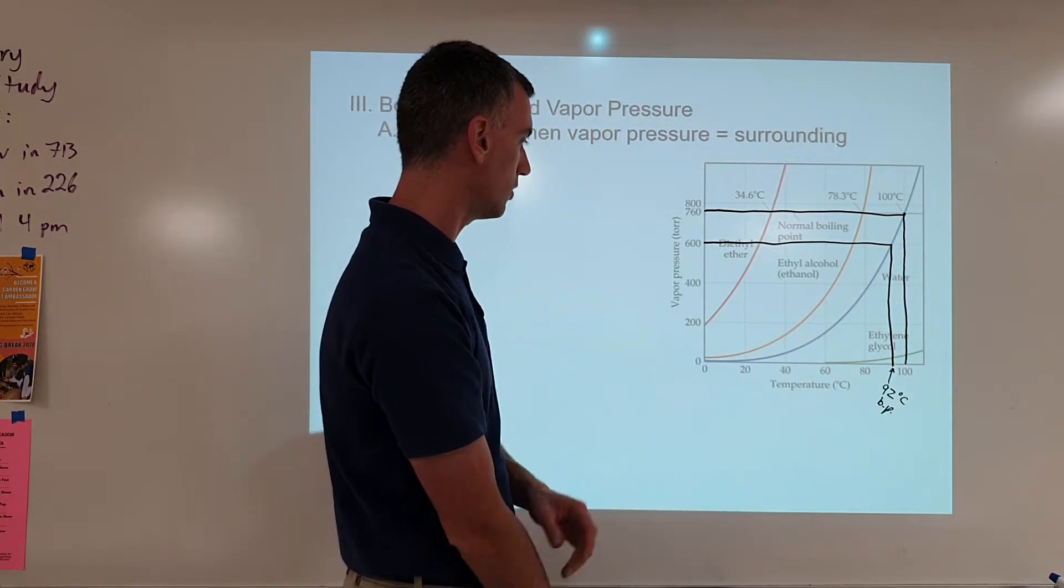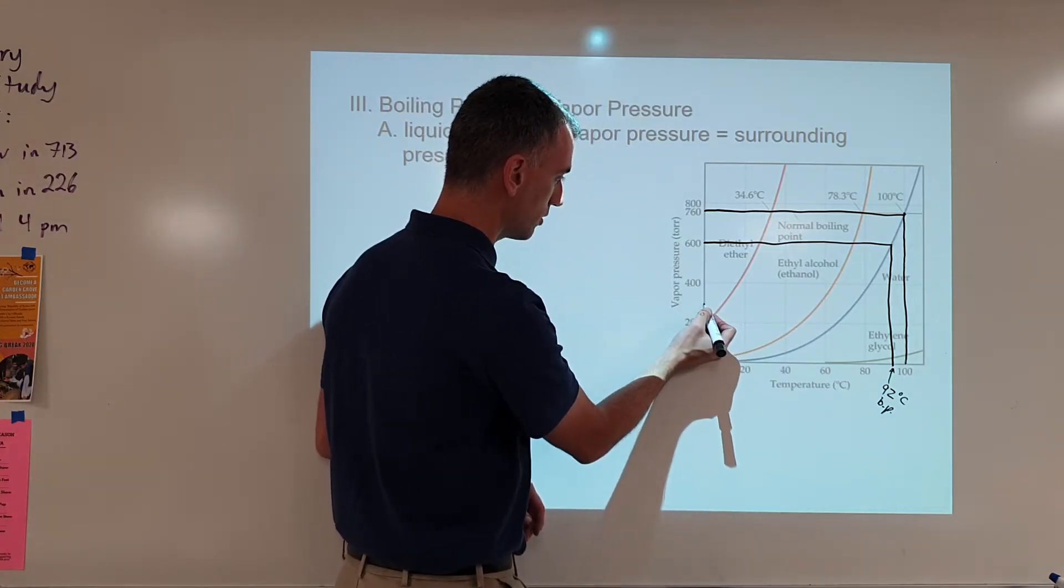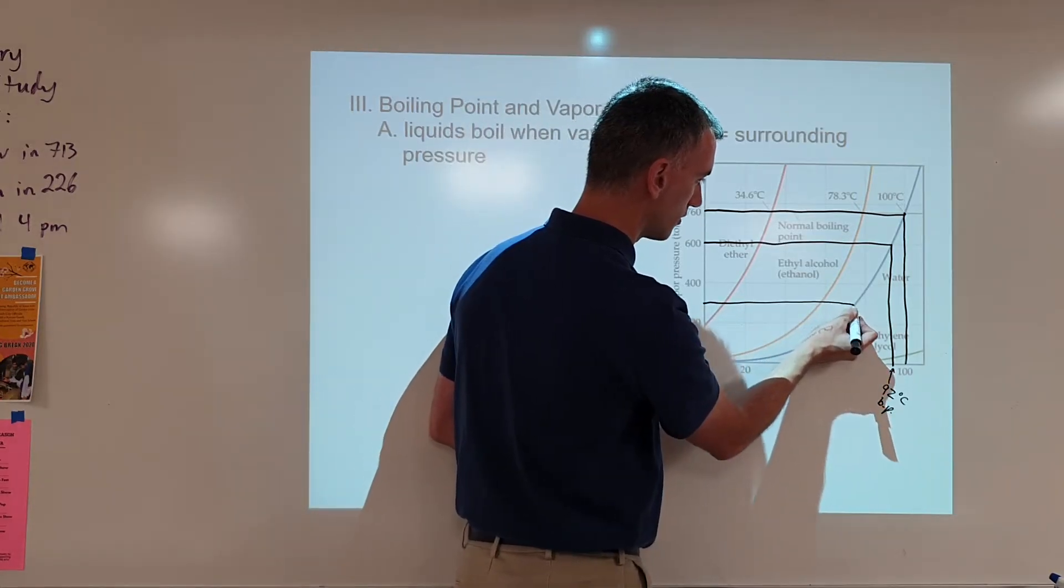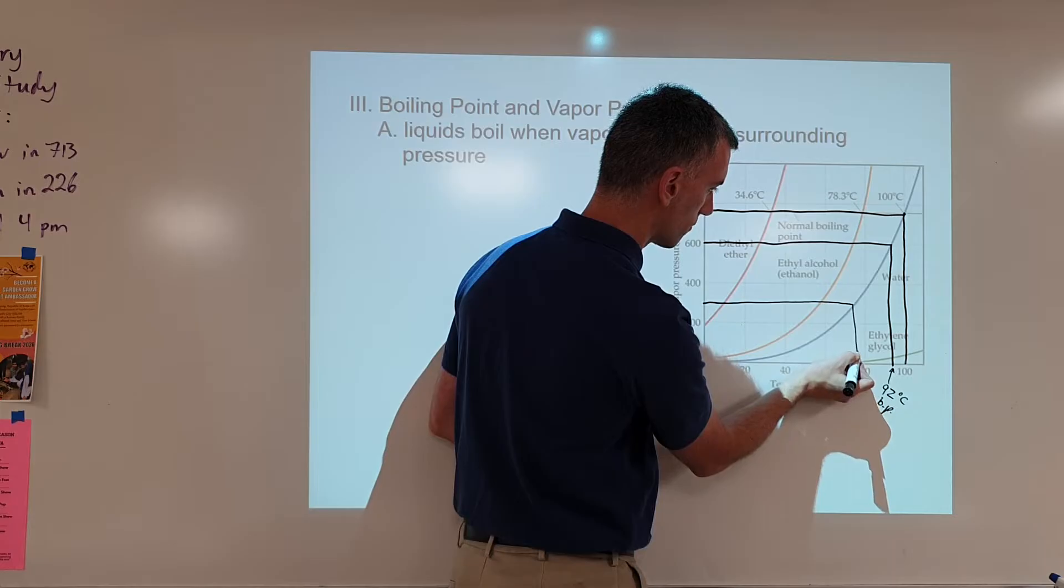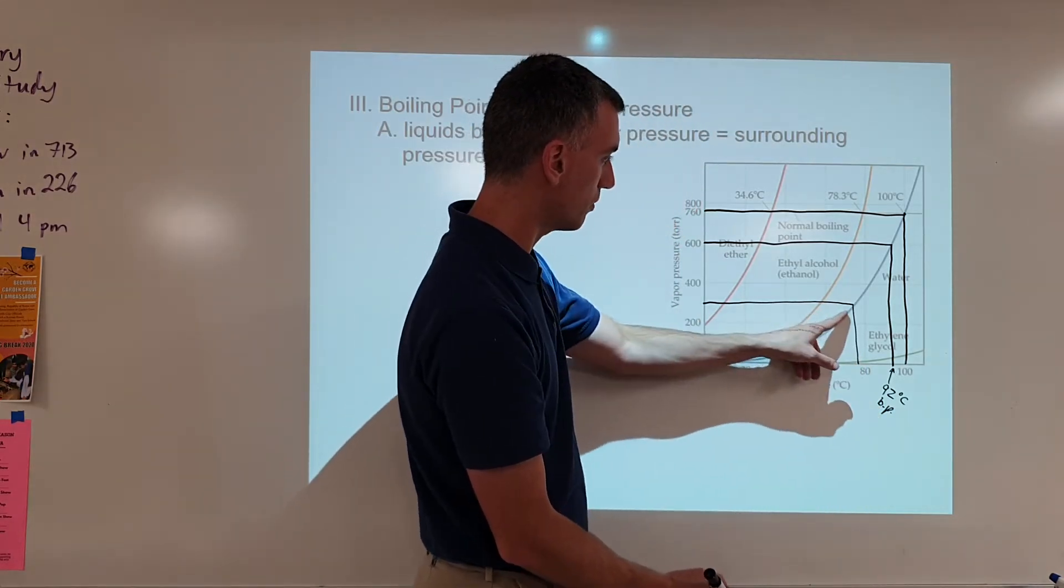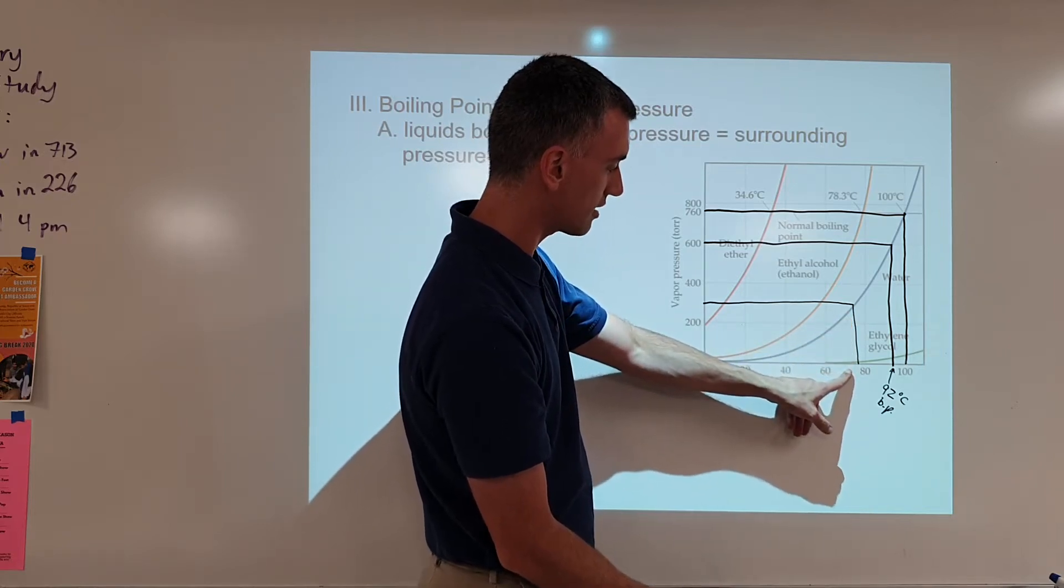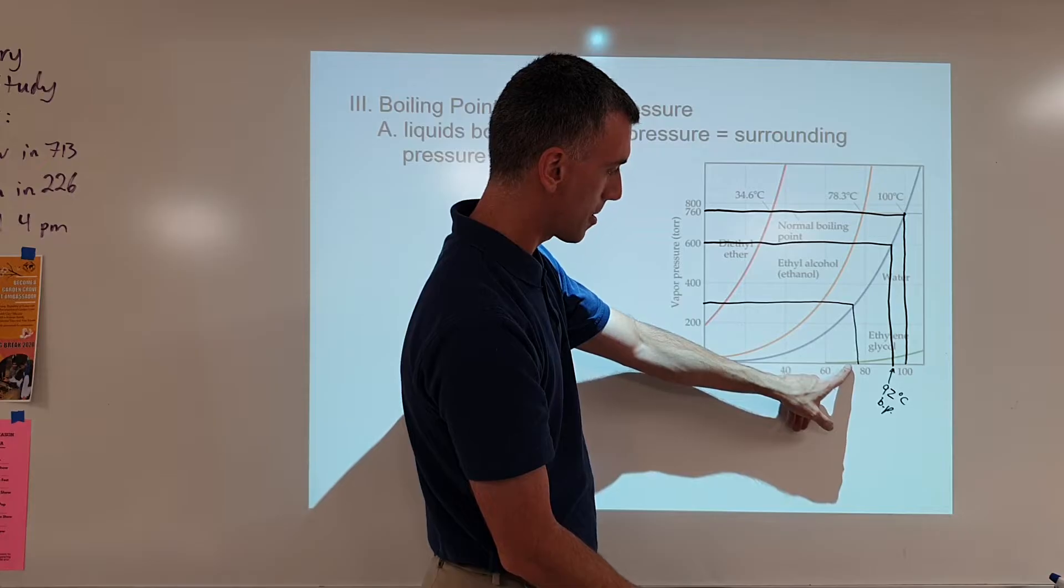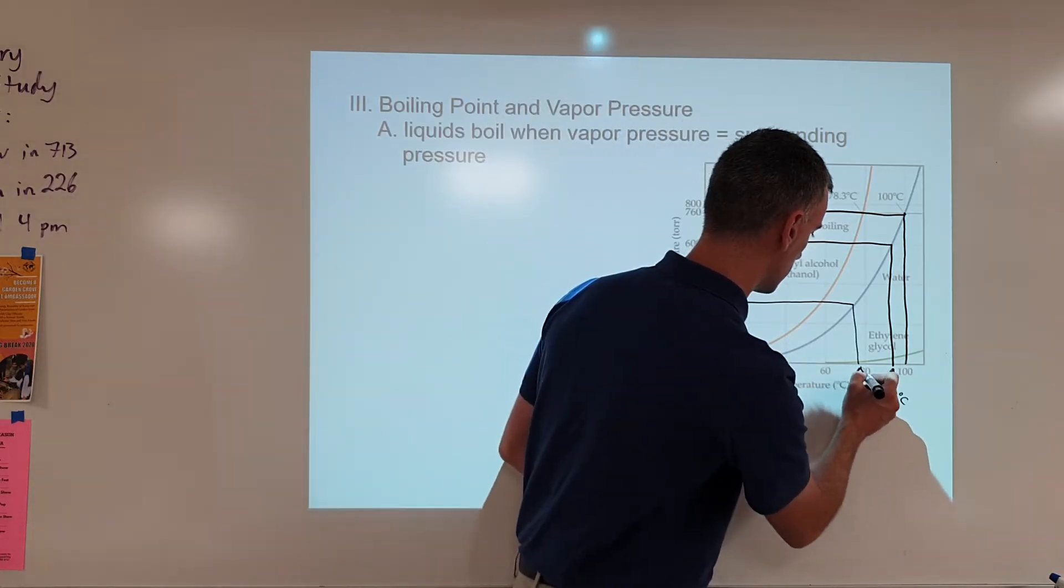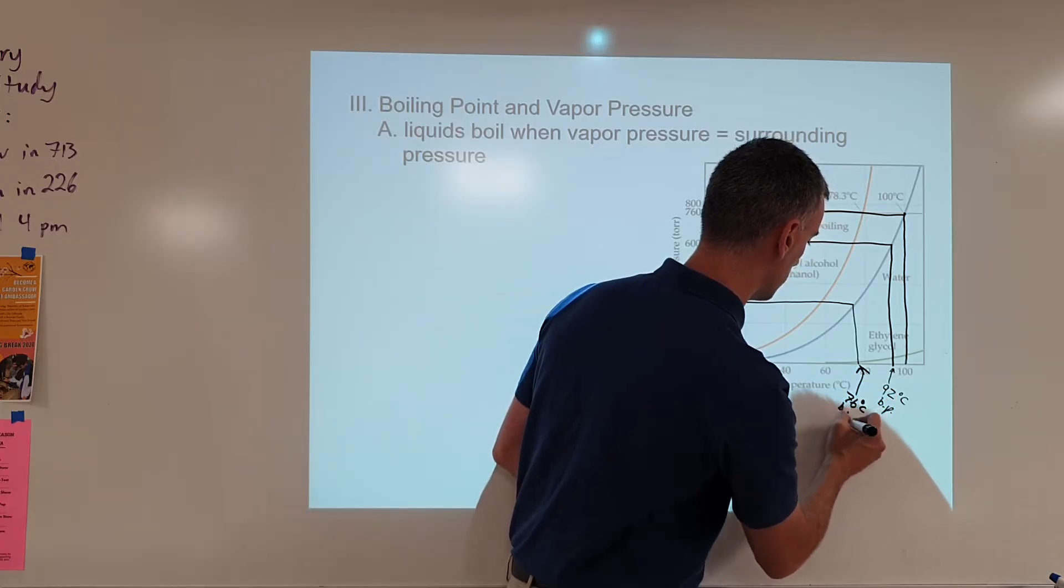What if I lower it to 300 torr? Well, I find 300 is halfway between 200 and 400, so I trace it over until I meet the water line, trace it down, and at 300 torr water would boil at less than 80 degrees. Let's see, we'll estimate that as approximately, this is 70, 75, maybe 76, 76 degrees Celsius boiling point.